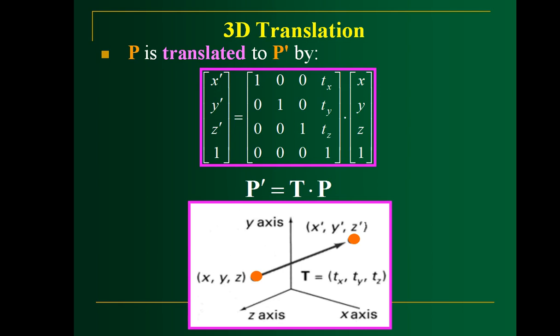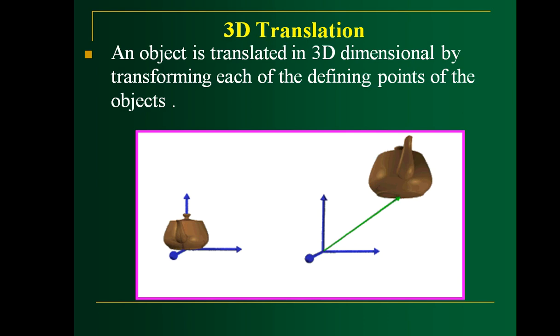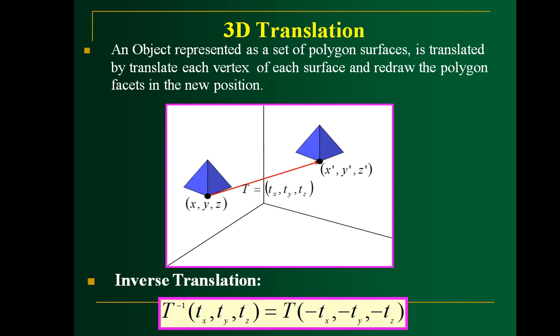It is similar to whatever you have seen in 2D translation. These transformations are used in design software and 3D software to model an object and apply different transformations. Here you have another example where an object is moved from one location to another by applying the translation vectors. You can also do inverse translation by just negating the translation vectors.